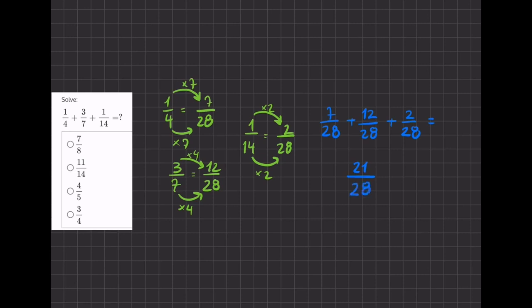Now this fraction is our final answer, but it's not in simplified form yet. So we have to find a number that divides evenly into both 21 and 28. That number will be 7.